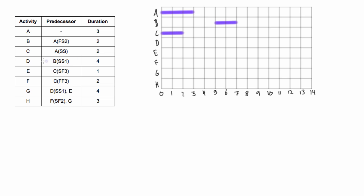Activity D depends on activity B. It's a start-start relationship with a lag of one. So we find where B starts, come down to D, and since it's a lag of one, we go out one. This is four days long, so we'll go from six out to ten.